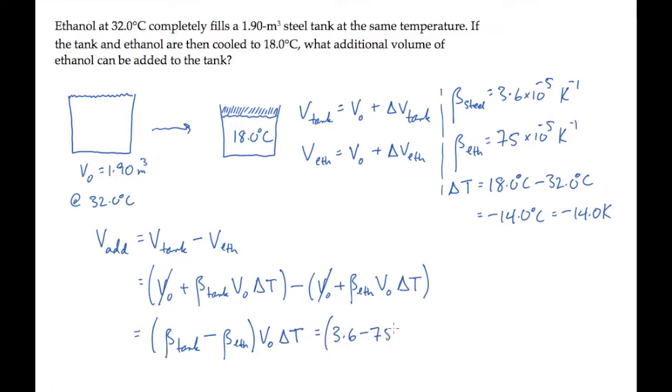Substitute all of these values into our expression to find that the extra volume of ethanol that can be added after the cooling is 0.019 cubic meters, which after a conversion equals 19 liters.